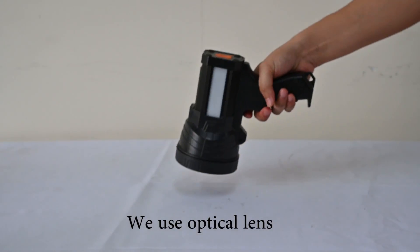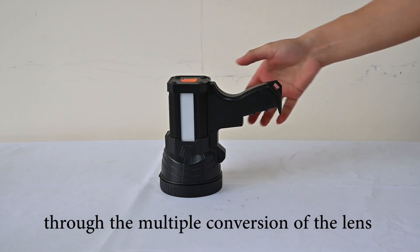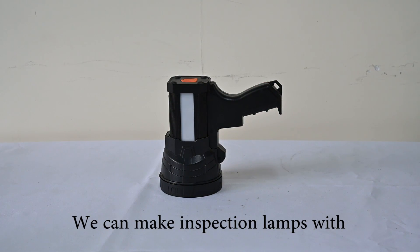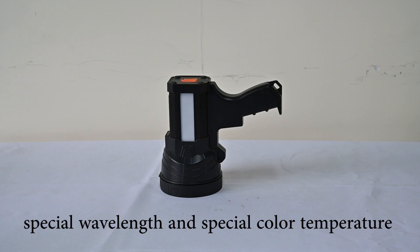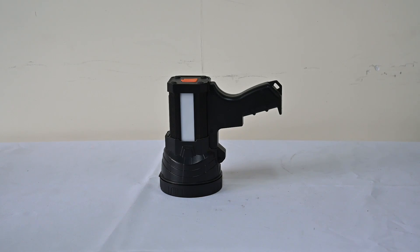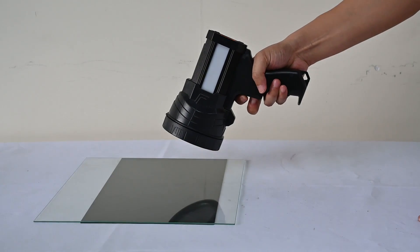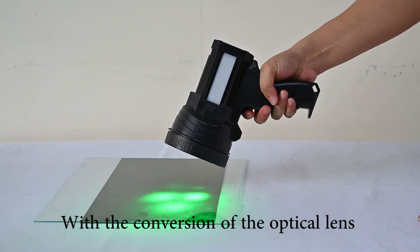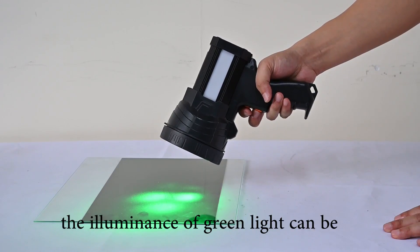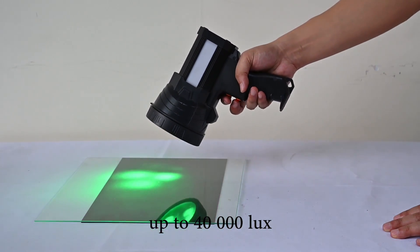We use optical lens through the multiple conventions of the lens. We can make inspection lamps with special wavelengths and special color temperature. With the convention of the optical lens, the illuminance of green light could be up to 40,000 lux.